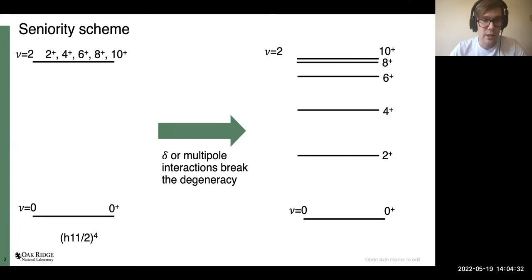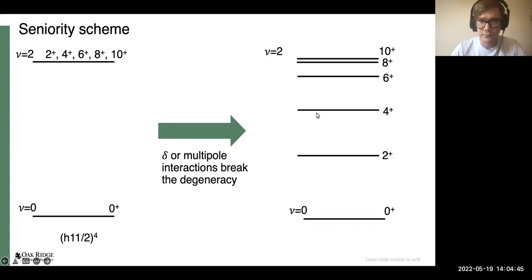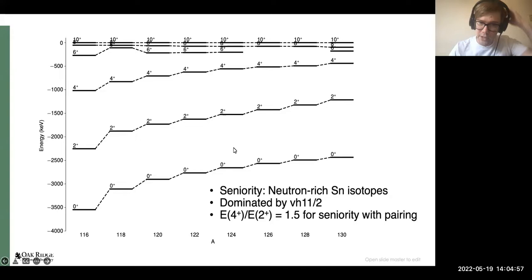Then typically you introduce some sort of interaction — like a delta interaction or a pairing interaction — that will break the degeneracy of these multiplet states, and you get something that looks a little more like the picture on the right, with increasing spin at the top and spacing increasing as you go down to the ground state.